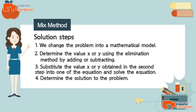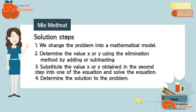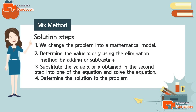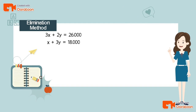In the first step we have already changed the problem into a mathematical model: 3x + 2y = 26,000 and x + 3y = 18,000. Now for the second step, we determine the value of x or y using the elimination method.